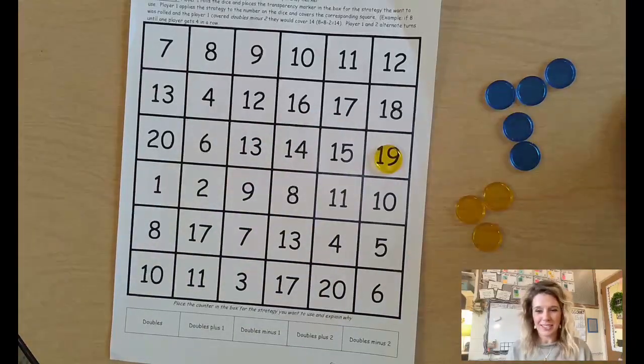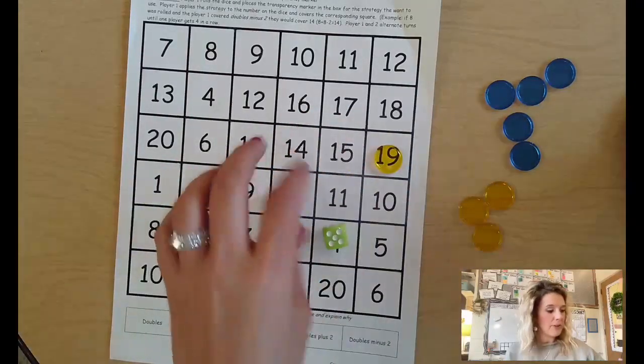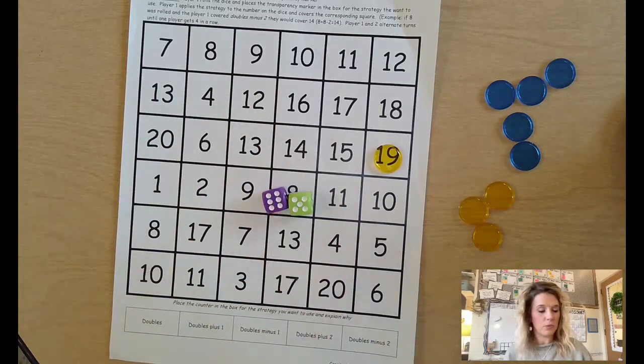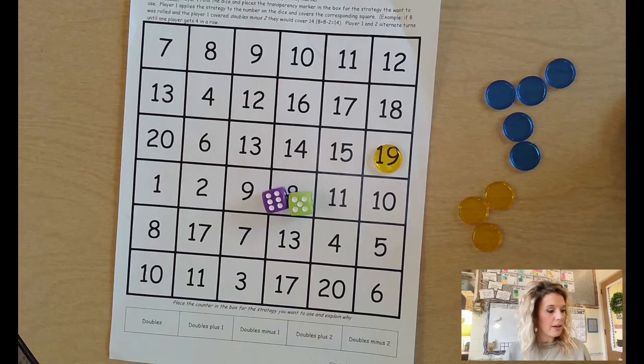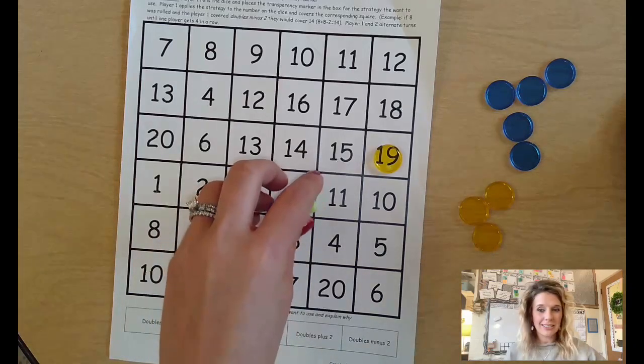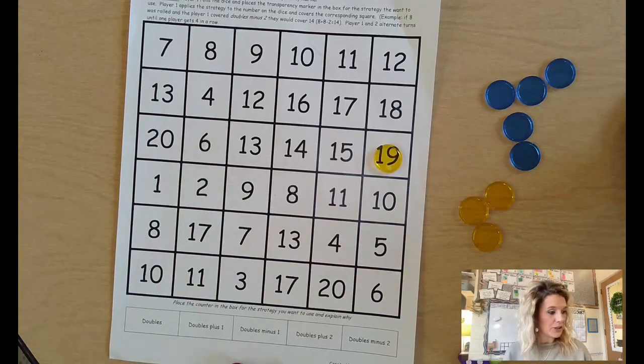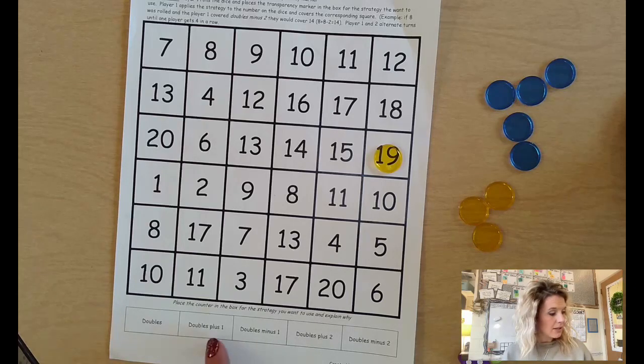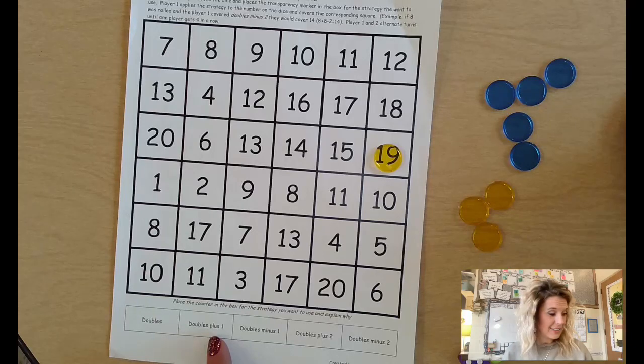Then it's player two's turn. Player two rolls. They get five and a six. Five plus six. Well, five plus five is 10 and one more is 11. 11 doubled is 22. Oh, that's not on here. I don't want to pick that one. Doubled plus one, 23. Not on here.